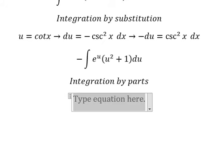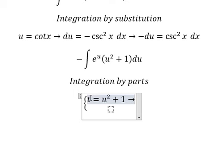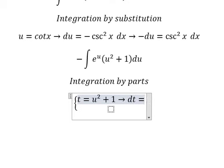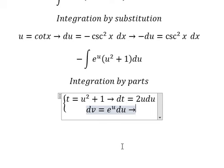So I will set t equals u squared plus 1. If I take the derivative of both sides, we have dt equals 2u du. For dv, we have e to the power of u du. The integration of this gives v equals e to the power of u.